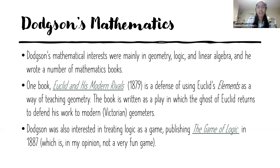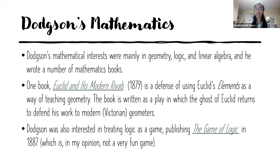I wanted to introduce some of the mathematics Dodgson was interested in. His work was primarily in geometry, logic, linear algebra, and recreational mathematics. He published several books on these topics and was also interested in voting methods. Dodgson brought some of his wit into his mathematical work as well as his stories for children, writing in Euclid and His Modern Rivals about the ghost of Euclid returning to defend his work to modern geometers. He wrote this play as a defense of using Euclid's Elements as a way of teaching geometry because he did not like the new geometry books being used in schools.